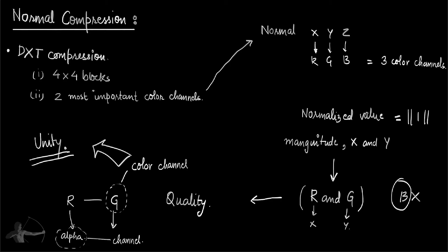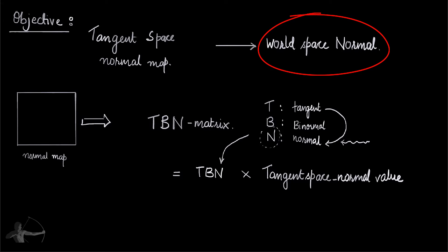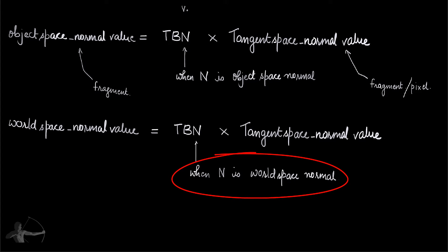So let's revise the chapter. What we have done so far is the goal of our shader will be to get the world space normal. We will be reading the normal map which is in the tangent space, and then we will create a TBN matrix. The TBN matrix that we will convert will be based on the world space normal.